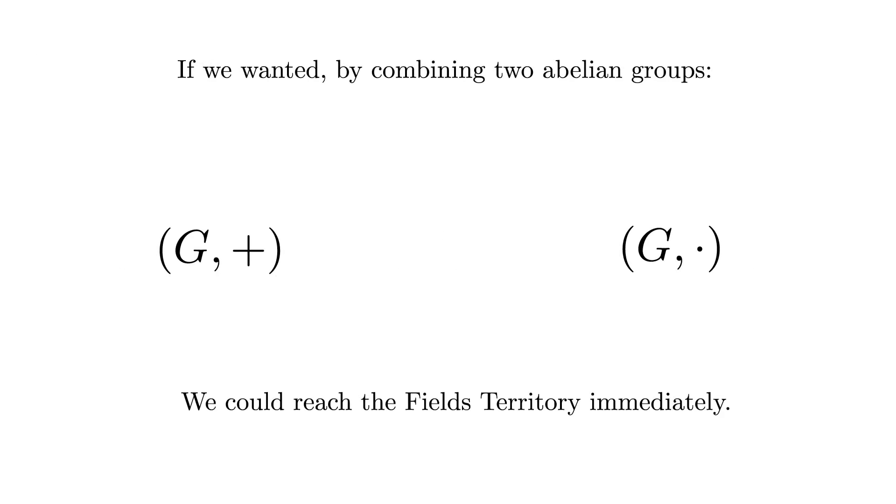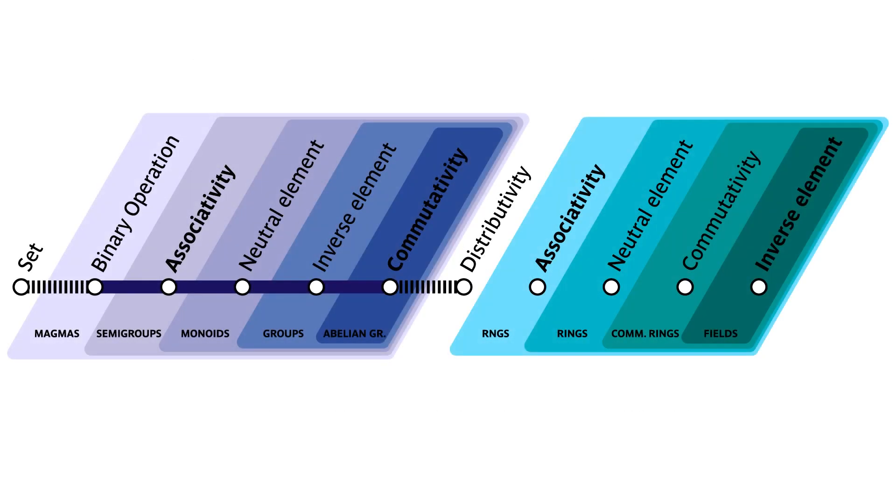Now we have a framework to combine any two binary operations. And if we wanted, by combining two abelian groups in that way, we could reach the field's territory immediately. There are a couple more stops along the way. We will follow a second line that we will call the multiplication line. Multiplication will be distributive with regards to addition, which means that A times (B plus C) equals (A times B) plus (A times C).